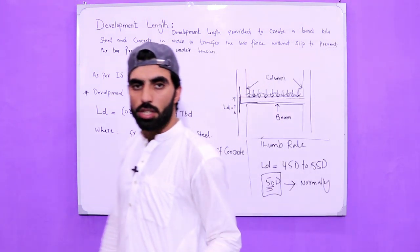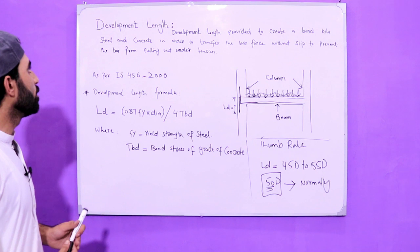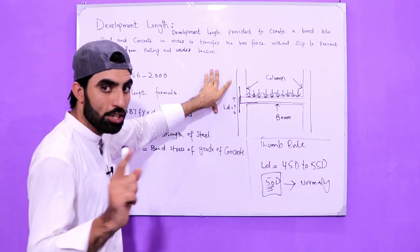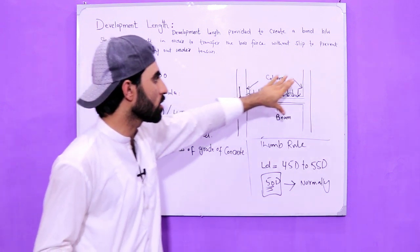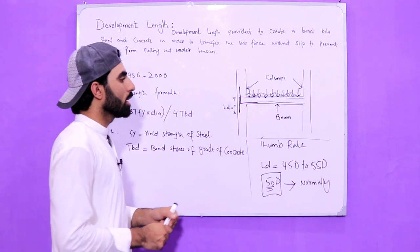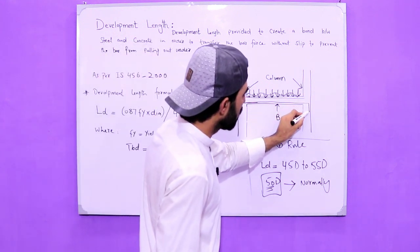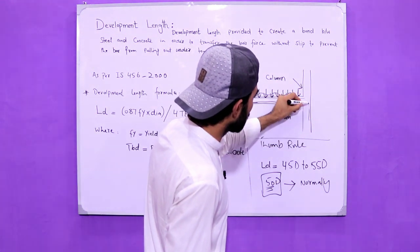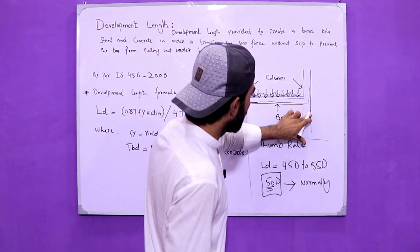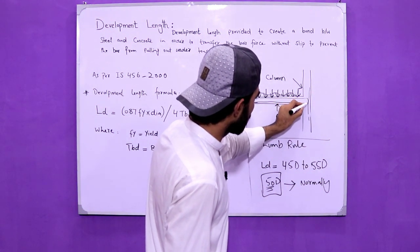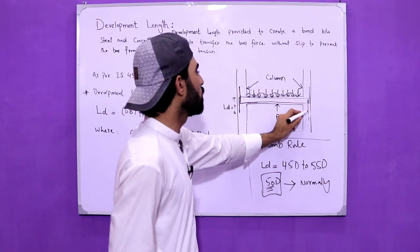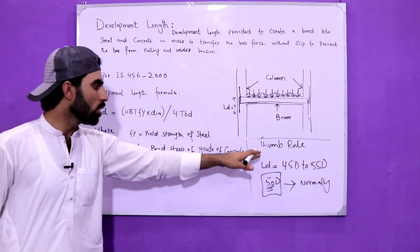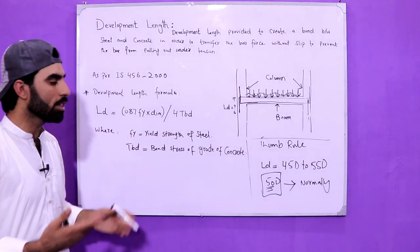This is a short but very interesting video about development length and where we provide it. Development length should be provided at the end of the supports — as you can see, this is one column and this is another column, and both are supports. The bottom bar goes upward and the top bar comes downward at the supports. These are called development lengths.